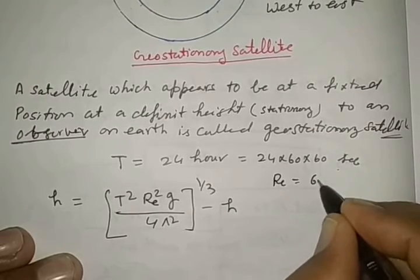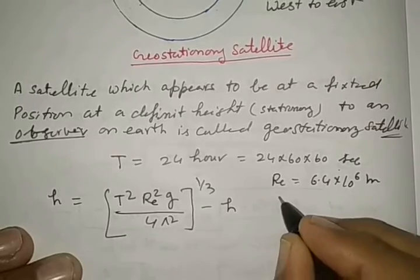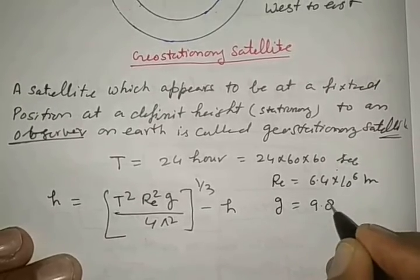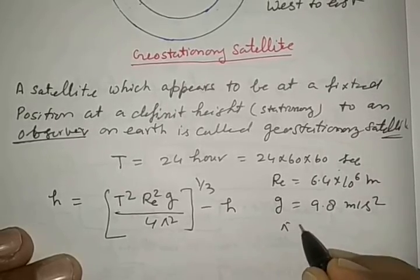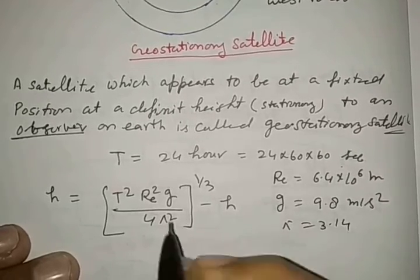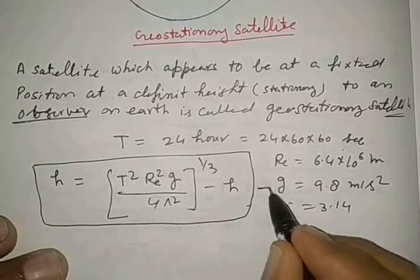Radius of Earth is 6.4 × 10^6 meters. Acceleration due to gravity g is 9.8 m/s². Pi is 3.14. We'll put all these values in the formula.